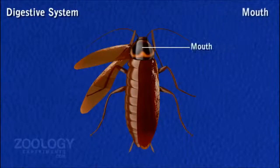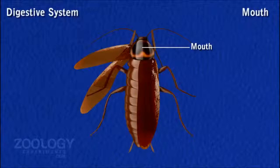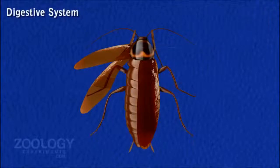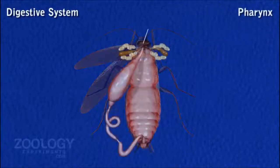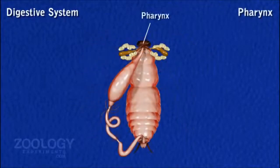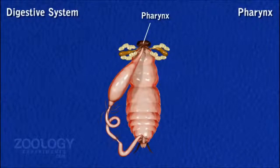Mouth: Mouth is a small opening at the base of the pre-oral cavity and leads into the pharynx. Pharynx: It is short and tubular and its circular lining is more folded posteriorly.